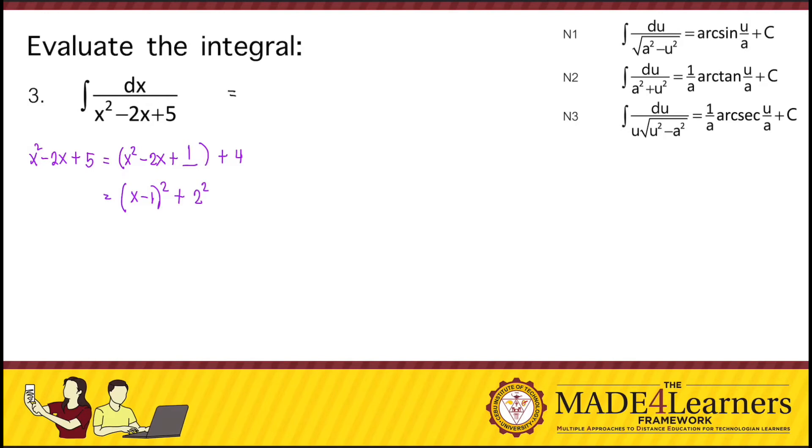Therefore, we can rewrite our given as dx over x minus 1 quantity squared plus 2 squared. So you see, it now follows the pattern of N2.